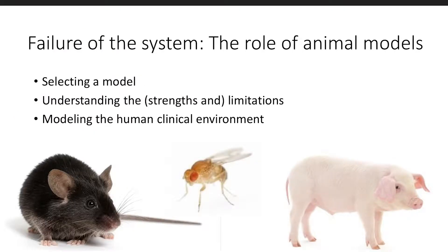One of the most foundational discussions in disease research and therapeutic development is the question of how best to model the disease in question. Most experimental animal models are induced to express a particular phenotype either genetically or through a particular intervention. But which model is best to answer your particular question? What are its particular strengths and weaknesses? And how well does it recapitulate the human clinical environment and condition of interest? All of these constitute fundamental questions that must be answered when designing a therapeutic development study.